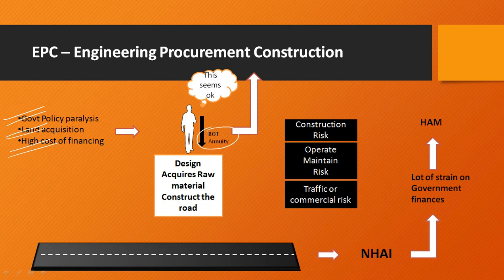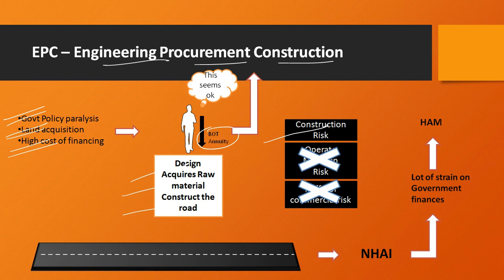The government then brought the EPC model — Engineering, Procurement and Construction — to award projects. As the name suggests, the private party only designs the project, acquires raw material and constructs the road, bearing only the construction risk. Immediately after construction, the road is transferred to the National Highway Authority of India. However, the EPC model was putting a lot of strain on government finances because one of the main motives of bringing private players is that they bring capital. But here, private players were bringing zero capital, so the government had to think of an innovative solution and came up with the hybrid annuity model.